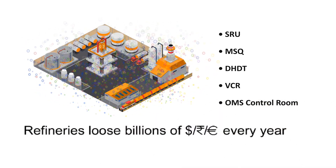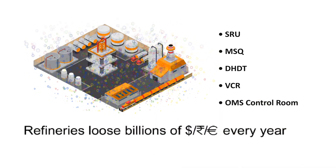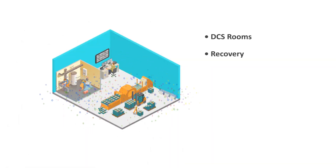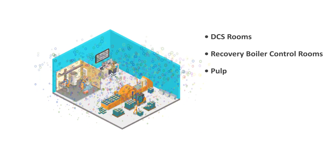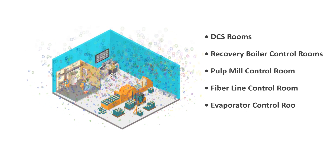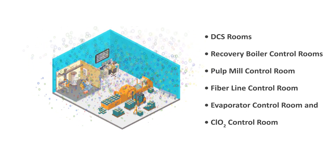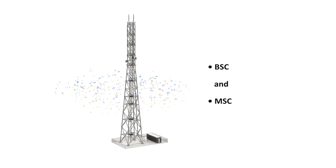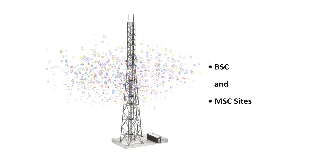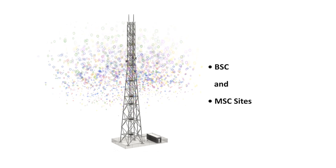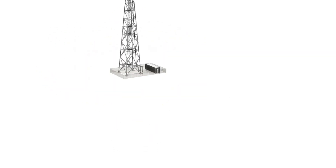Refineries lose billions of dollars every year due to corrosion-related outages. In pulp and paper industry, DSC rooms, recovery boiler control rooms, pulp mill control rooms, fiber line control rooms, evaporator control rooms and CLO2 control rooms are affected by corrosive gases. In the telecom industry, uncontrolled corrosive gases in BSC and MSC sites reduce the life expectancy of sophisticated devices, apart from causing electronic malfunctions, signal failures and downtime losses.